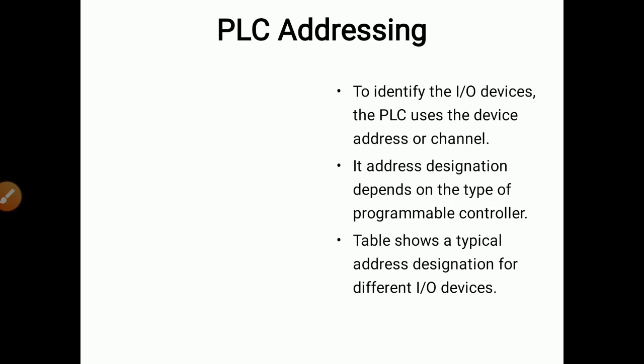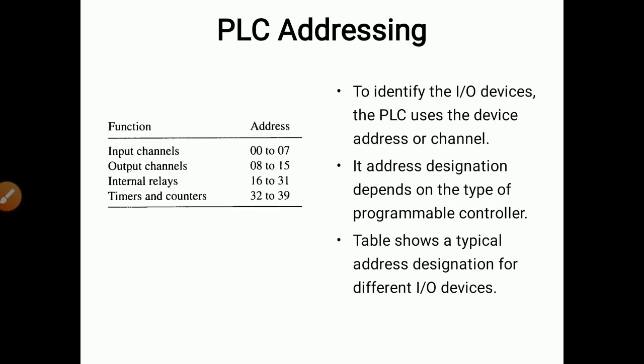To identify input/output devices, the PLC uses a device address or channel. Each device has a unique address. The address designation depends on the type of PLC. For example, in one table: input channels are addressed 0 to 07, output channels 8 to 15, internal relays 16 to 31, and timers and counters 32 to 39.